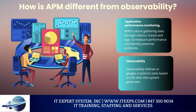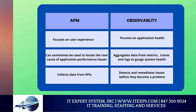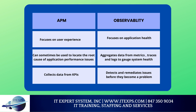The terms application performance monitoring and observability are often used interchangeably, but they can diverge in scope. APM is about gathering data through metrics, traces, and logs to measure performance and identify potential problems. Observability shares a similar definition — it defines or gauges a system state based on the data that system generates. For relatively simple systems involving a handful of hardware and a limited physical deployment, APM and observability are indistinguishable. However, observability typically goes further than APM; the fundamental difference is in how much data is collected and how that data is processed and interpreted.